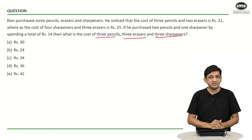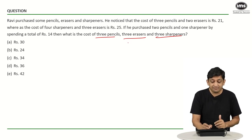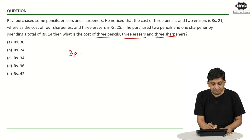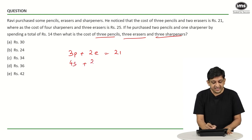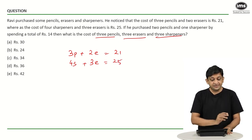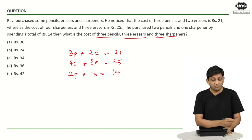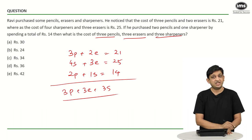Let us try this question. Assume the price of each pencil is P rupees, each eraser is E rupees and each sharpener is S rupees. Then: the cost of three pencils, so 3P plus two erasers equals 21. The cost of four sharpeners: 4S plus three erasers equals 25. And two pencils plus one sharpener costs 14. We have to find the cost of 3P plus 3E plus 3S.